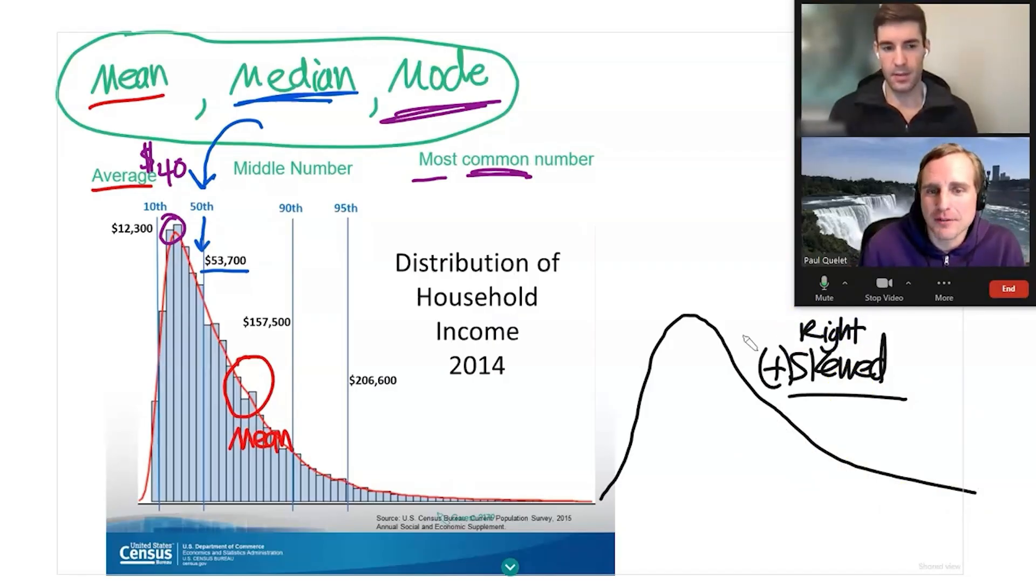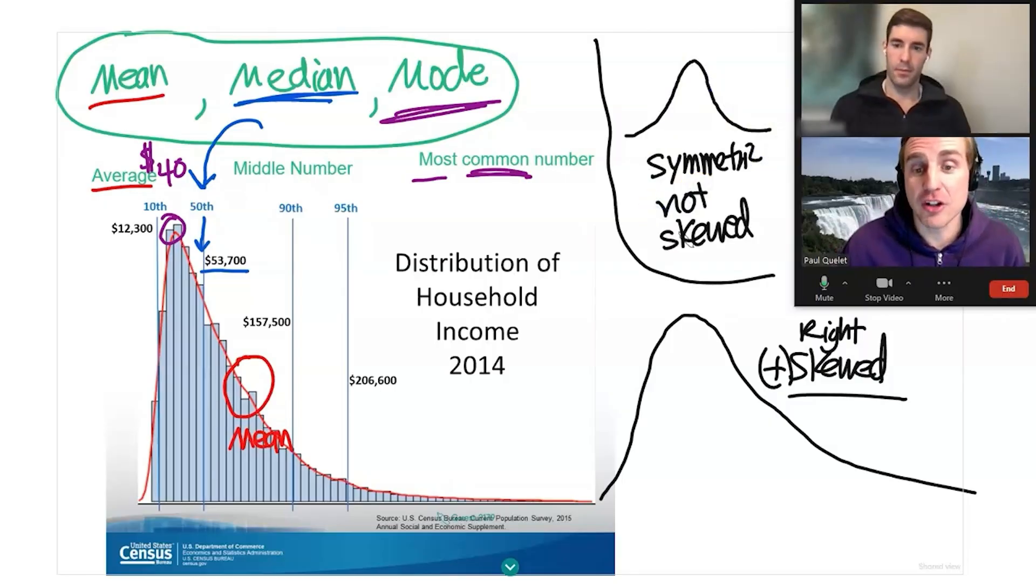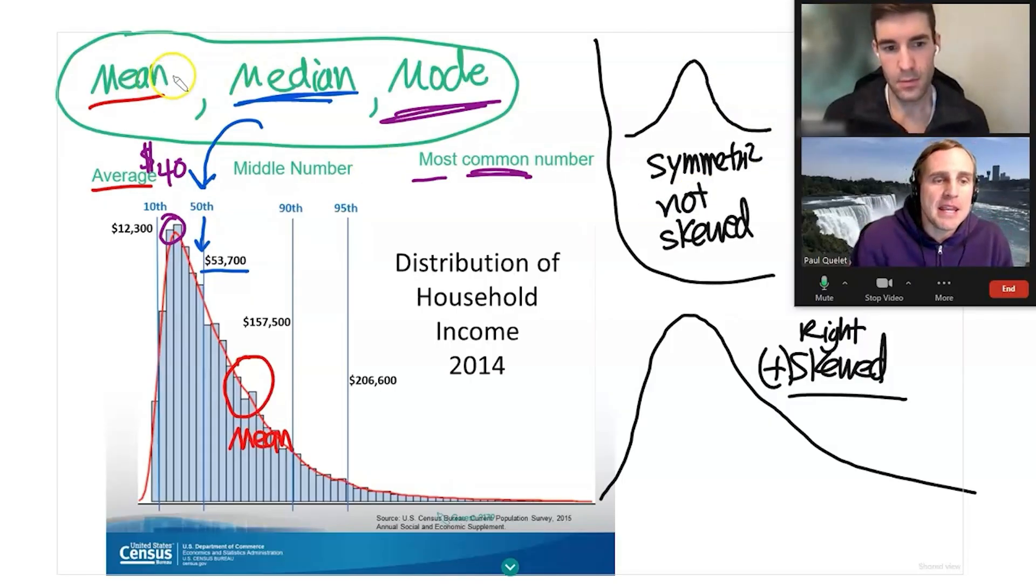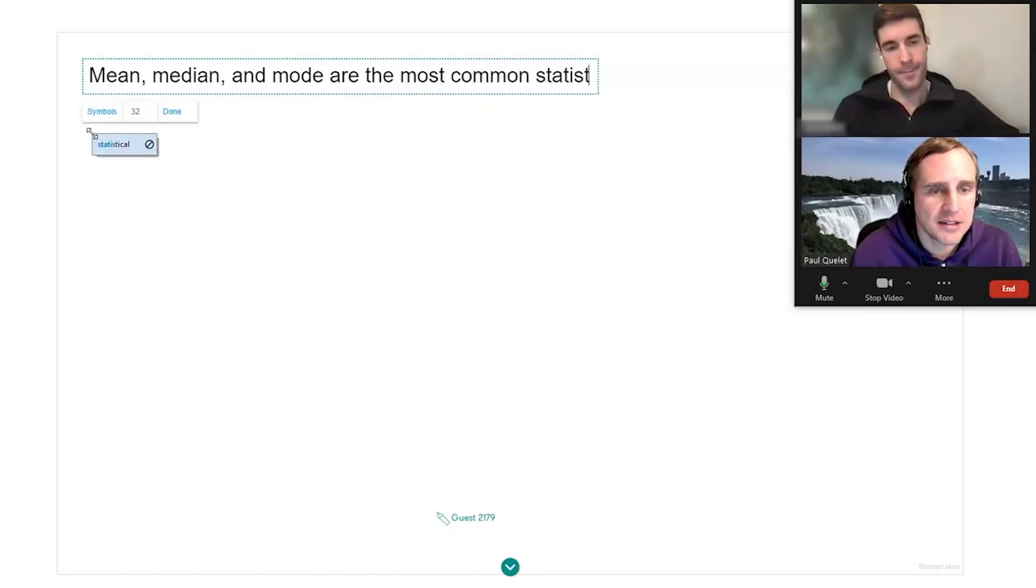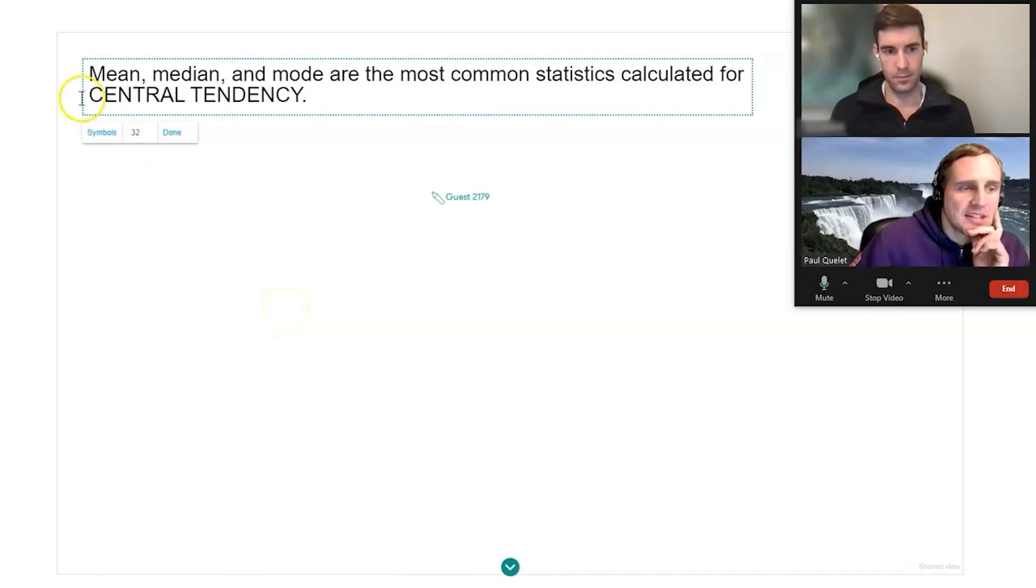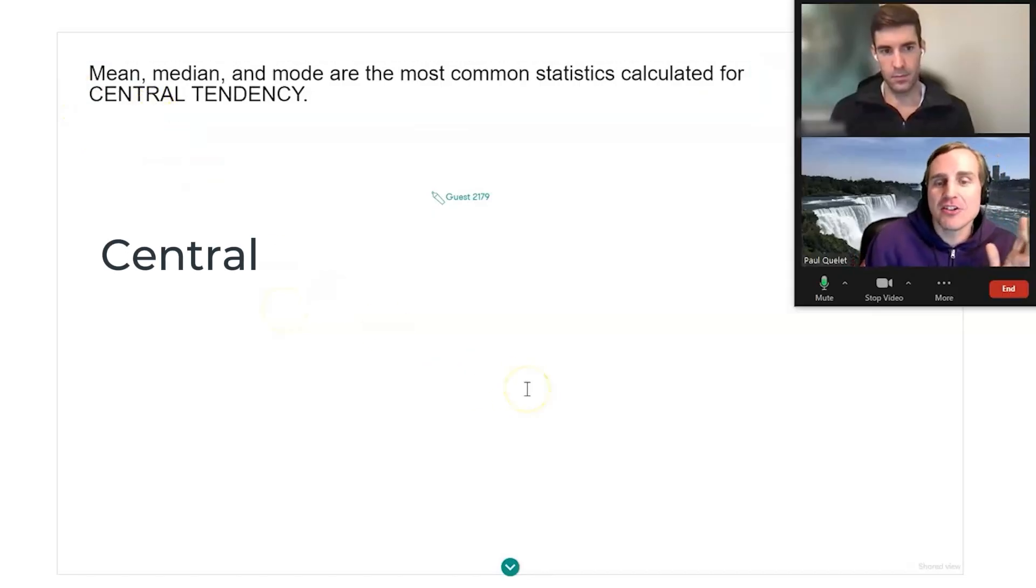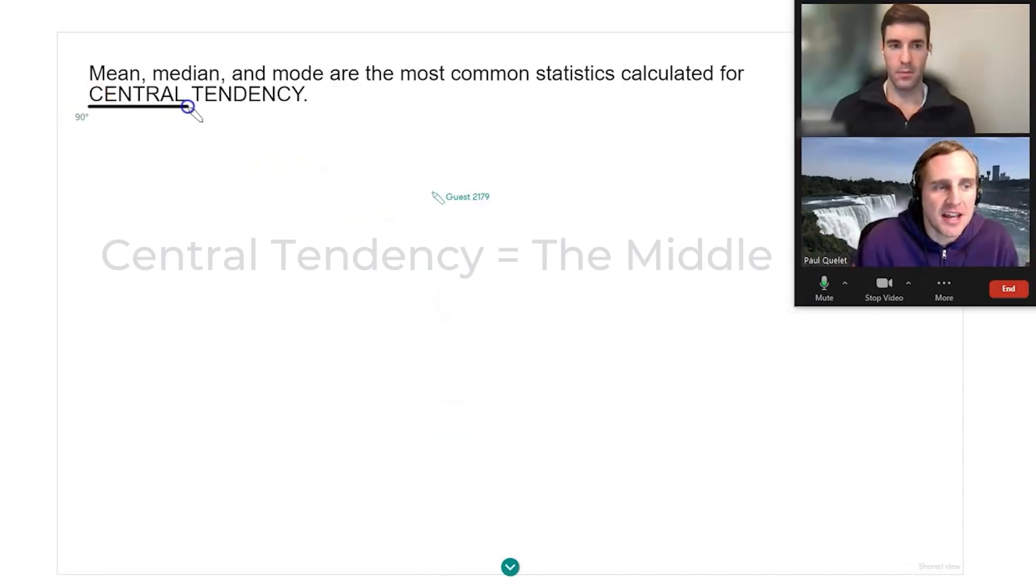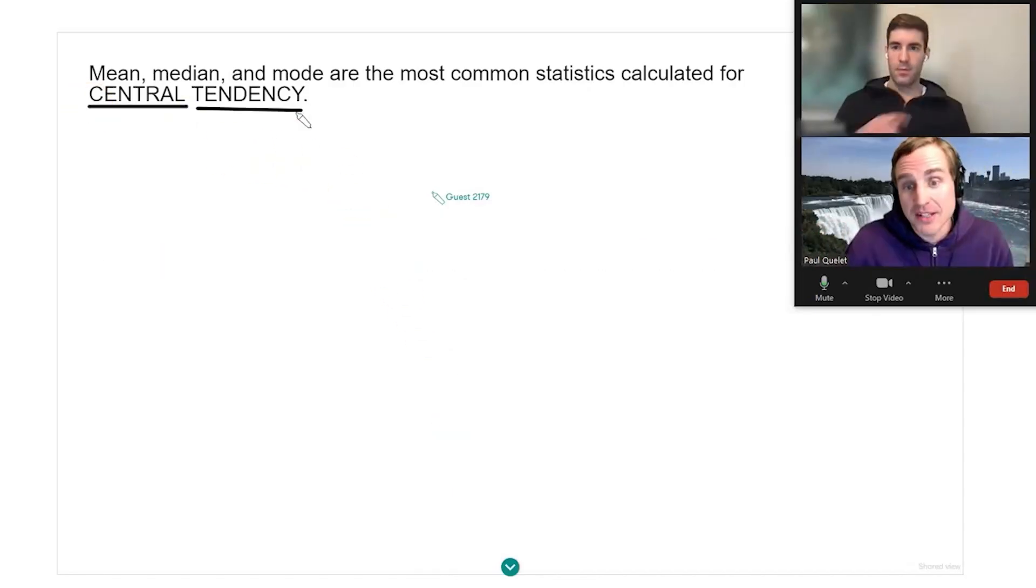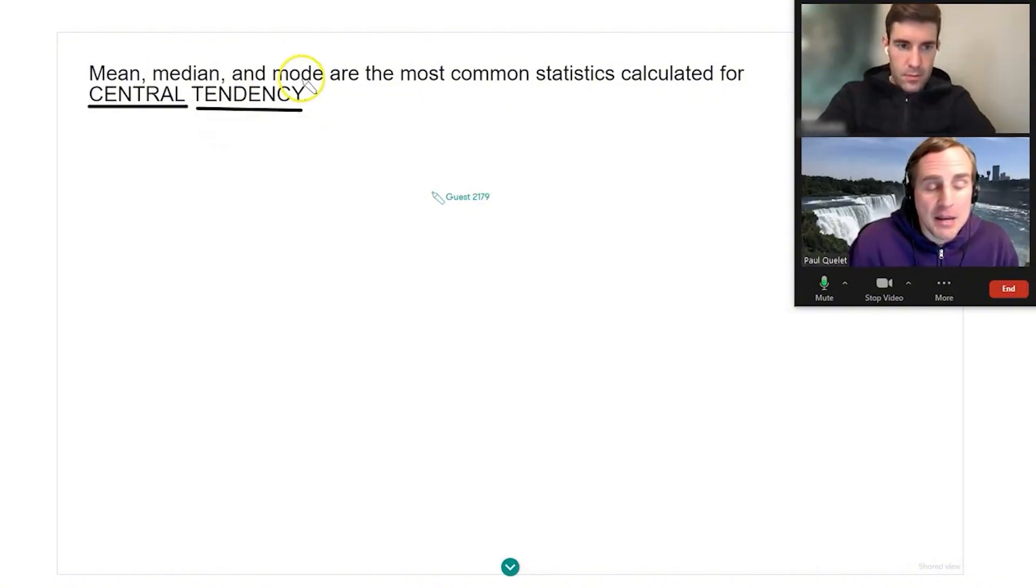Skewed is not symmetric. As a point of comparison, the bell curve would be symmetric and it's not skewed. The reason I bring this to your attention and why this is really important is because mean, median and mode are all sometimes called the most common statistics calculated for central tendency. Central tendency just means the middle. Like how do you define the middle of the data set? By far, the mean is the most common statistic or number we're going to use in statistics, but median and mode are sometimes used as well. And there's reasons for that.